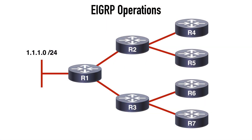The stuck-in-active state can occur when an EIGRP process loses a route to a particular destination and is unable to find an acceptable alternate route, or in other words a feasible successor. If we look at this sample topology, we have several routers interconnected, all participating in EIGRP, and on R1 we have a single route out to the 1.1.1.0/24 network. When a route is reachable via EIGRP, that route is in the passive state. So within a stable EIGRP network, all of our routes with valid successors are going to be passive.